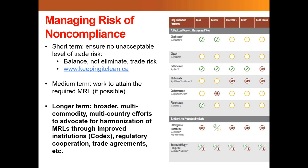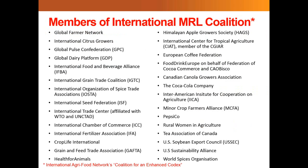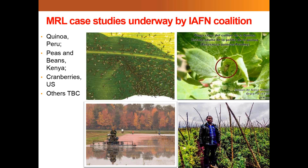Longer term, what we really need is for governments to do a better job of talking to each other so that when they're regulating crop protection products and protecting consumer safety, they're doing it in a way that's reasonably aligned with one another. There are some very bright spots and good examples of collaboration, like the Global Joint Reviews that Canada's Pest Management Regulatory Agency participates in. I wanted to describe one international MRL coalition and give a snapshot of just how extensive the membership is — to illustrate that this is not an issue that affects only Canada. Case studies are being developed to demonstrate the effect of missing and misaligned MRLs on growers around the world, including quinoa in Peru, succulent peas and beans in Kenya, and cranberries grown in the U.S.